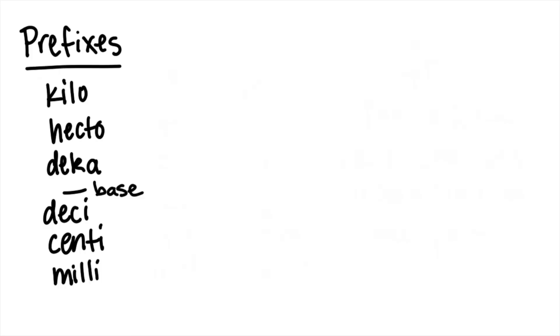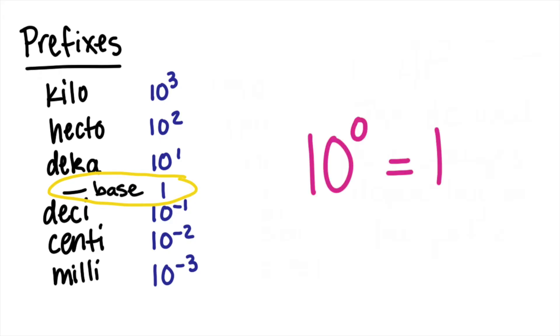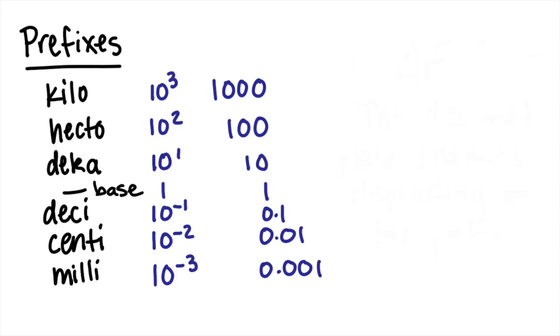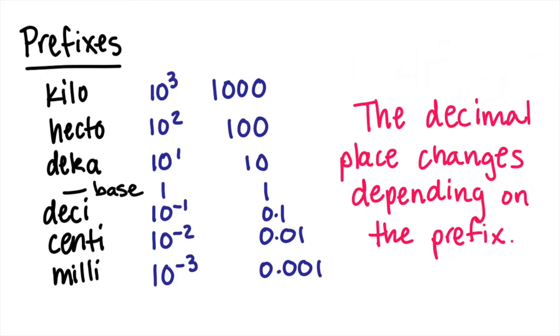Each prefix is associated with a power of 10, the base unit being 10 to the zero power, or 1, since anything raised to the zero power is equal to 1. Since we're multiplying and dividing by powers of 10, the decimal place is basically changing depending on the prefix.